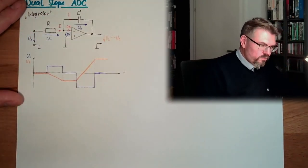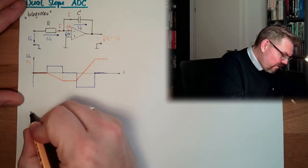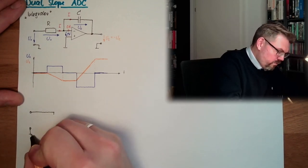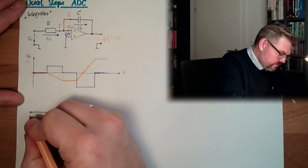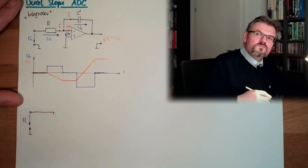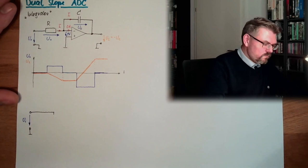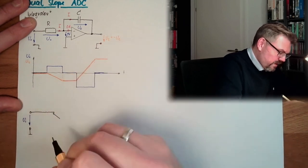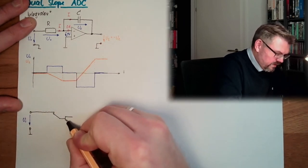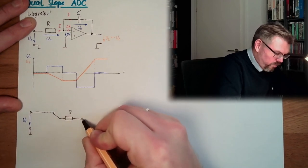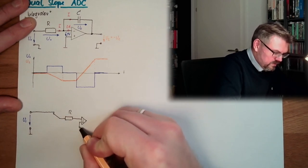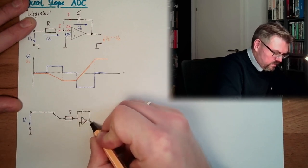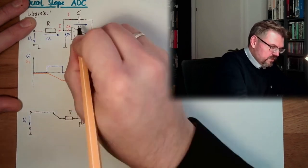So how is the dual slope converter working? Of course we have again our input voltage. So here we have our UI. This is what we want to measure, digitize. And then we have a switch. And next to the switch we have our integrator with our R, with our operational amplifier minus plus, and with our C. This is our integrator part.